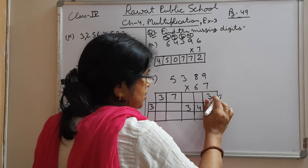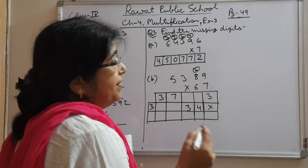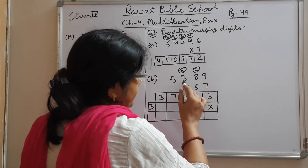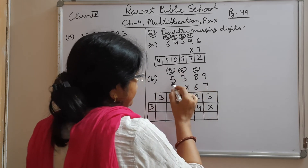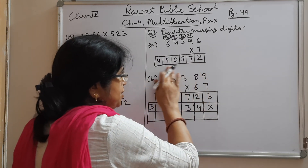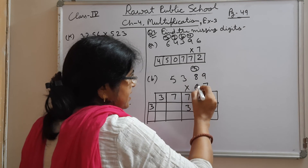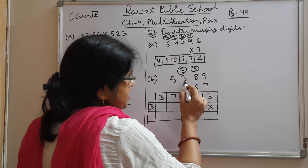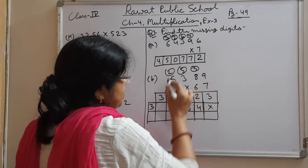Let's solve: 7×9=63, write 3, 6 carry over; 7×8=56, plus 6=62, write 2, 6 carry over; 7×3=21, plus 6=27, write 7, 2 carry over; 7×5=35, plus 2=37, given. Now for the tens row: 6×9=54, write 4, 5 carry over; 6×8=48, plus 5=53, write 3, 5 carry over; 6×3=18, plus 5=23; 2 carry over; 6×5=30, plus 2=32.